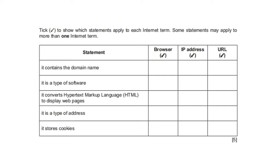Tick to show which statements apply to each internet term; some statements may apply to more than one. It contains a domain name — that is the URL. It is a type of software — that is the web browser. It converts HTML to display web pages — that is the web browser. It is a type of address — both IP address and URL are types of addresses. It stores cookies — that is the web browser.